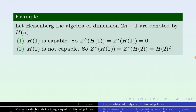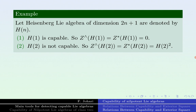H_1 is capable, so the exterior center of H_1 is equal to the epicenter of H_1, which is zero. The exterior center of H_2 is equal to the epicenter of H_2, which is equal to a subalgebra of H_2. By using the definition of the exterior square, the exterior center of L is defined, which leads to simple calculations for finding the elements of the exterior center using the presentation of the algebras. This is useful for detecting non-capability.